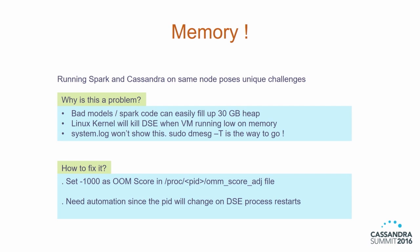On all of our nodes we run Spark and Cassandra, which means we have interesting memory characteristics. If you have bad data models or aren't following good guidelines in your Spark code, it can easily fill up the 30 gig heap. This is not easily discoverable in system logs. When the Linux kernel finds the VM is running low on memory, it finds the process taking the maximum amount of memory and kills it. You can see this in the kernel logs. To fix this, you have to set a low OOM score in your process's OOM score ADJ file. Setting it to minus 1,000 — the magic number — means the kernel will never pick your Cassandra process to kill. Since the PID changes as the DAC process restarts, you need automation to constantly monitor and fix this.